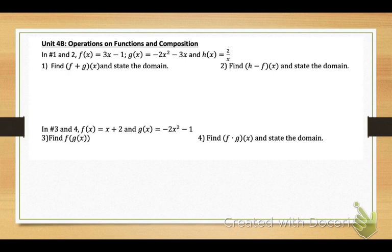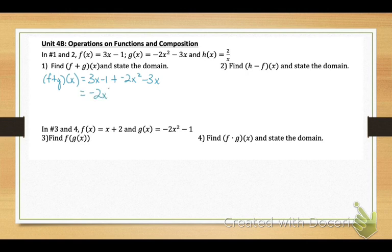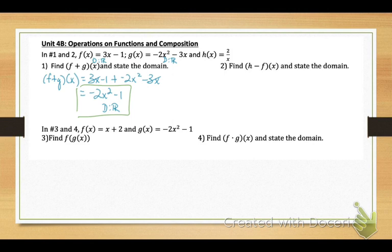Number 1 says find f plus g of x and state the domain. You're going to get the f equation, which is 3x minus 1, and add it to negative 2x squared minus 3x. Combine like terms: that equals negative 2x squared — the 3x's subtract out — minus 1. For the domain, f is linear and g is quadratic, both with all real numbers. The new function is also all real numbers. Watch for square roots or variables in a denominator, which would require adjusting the domain.